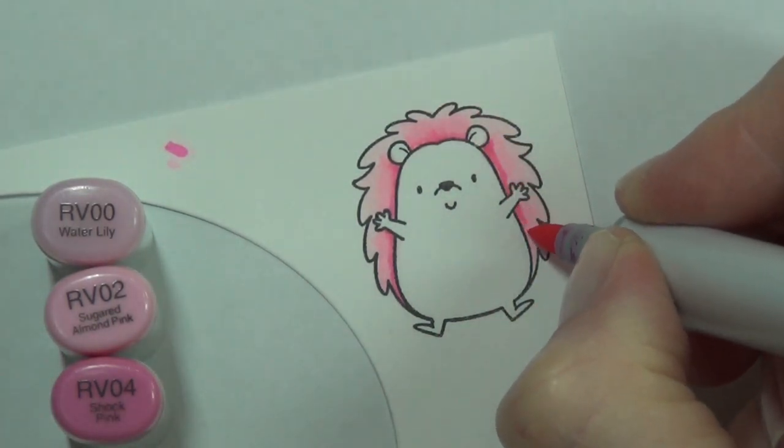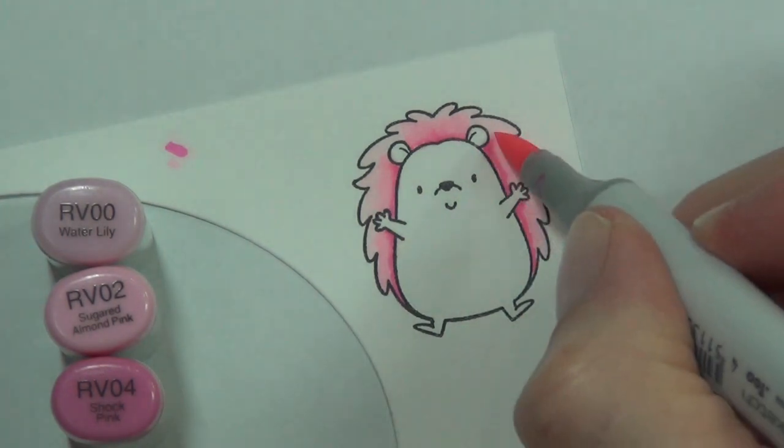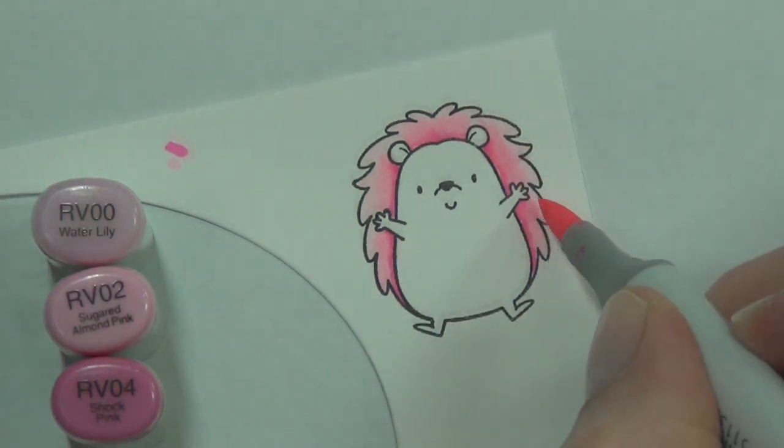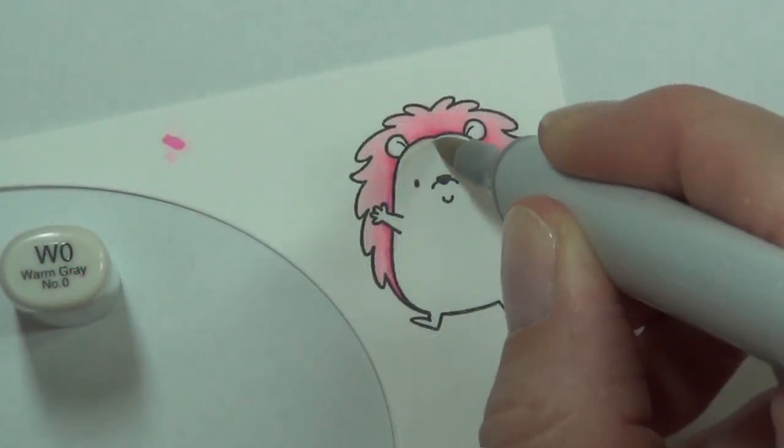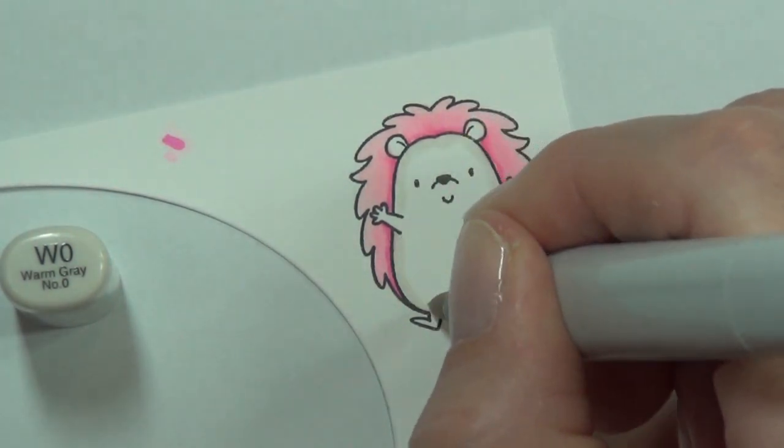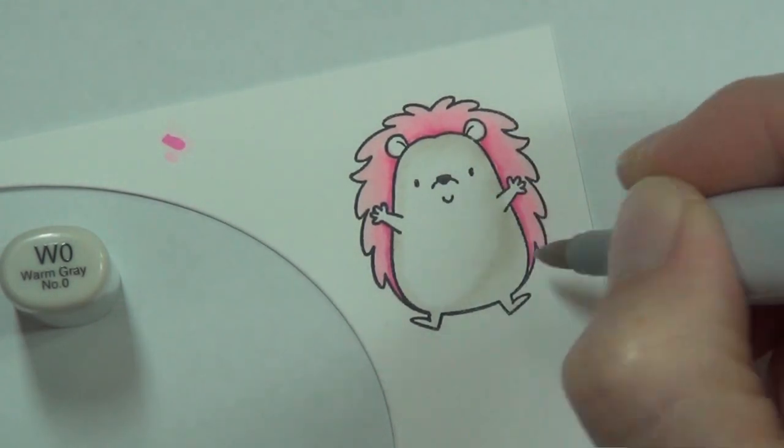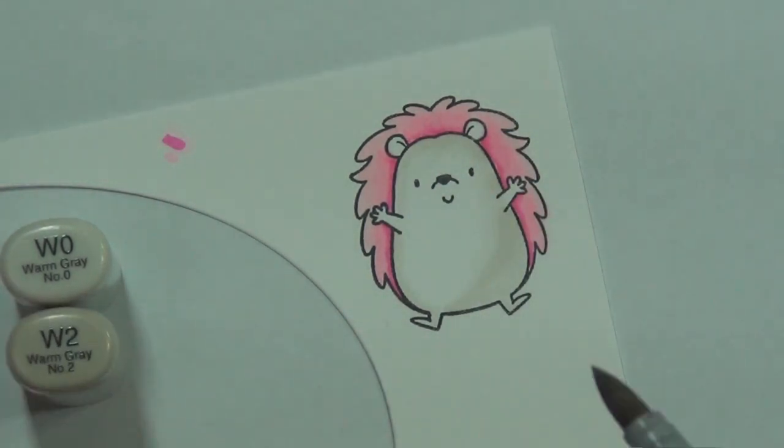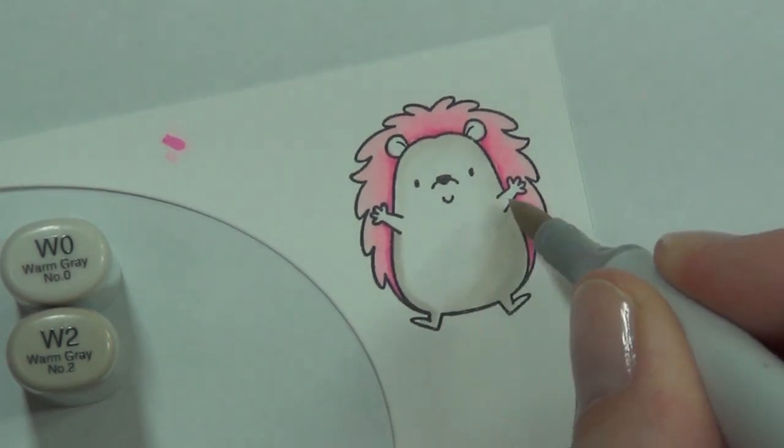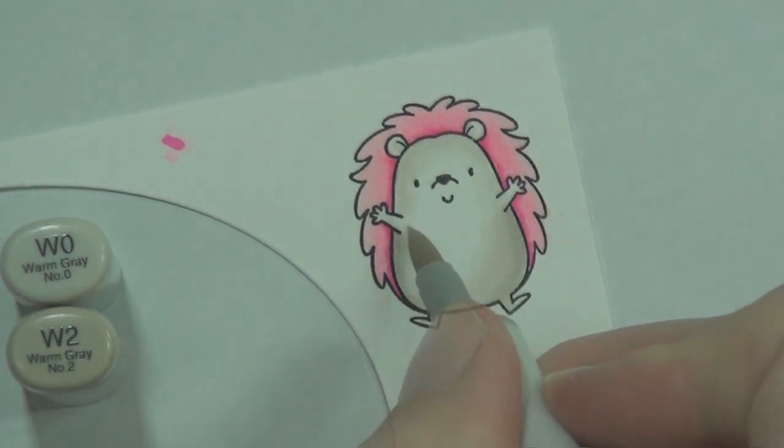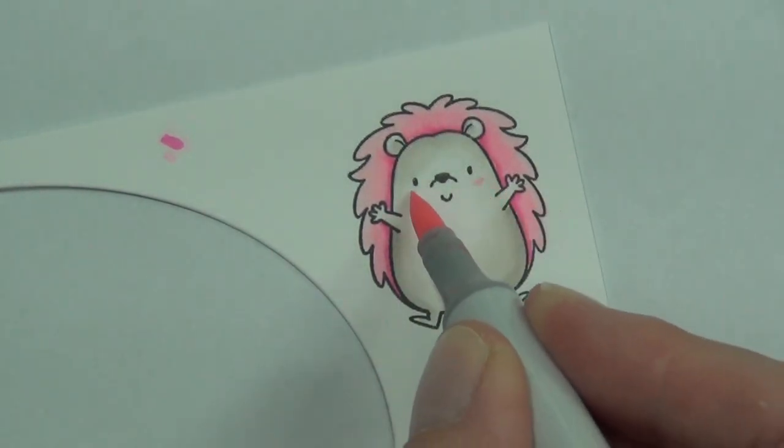I did bring the RV04 in to do some shading, and probably should have stopped right there. But I did go in with the W family - this is one of the warm neutrals - so it's a really nice color to use on animals in particular. I actually use this color a lot and I'm really glad that I've gone for this series. I use my T's as well - the tones.